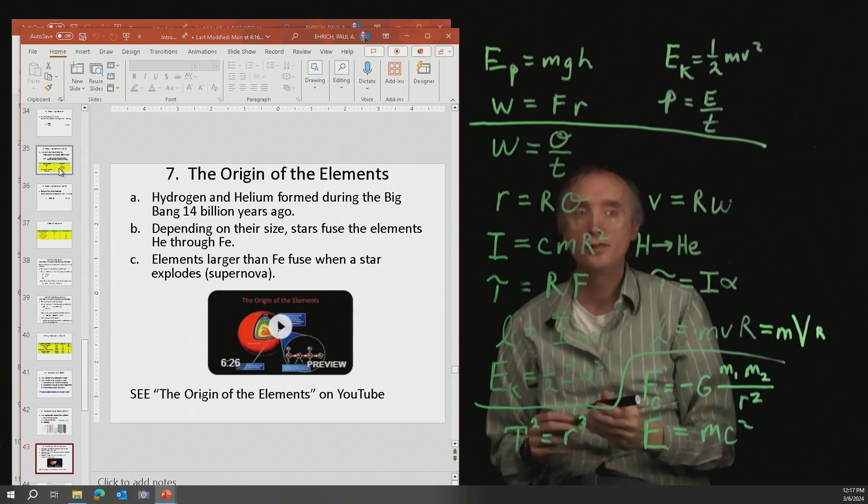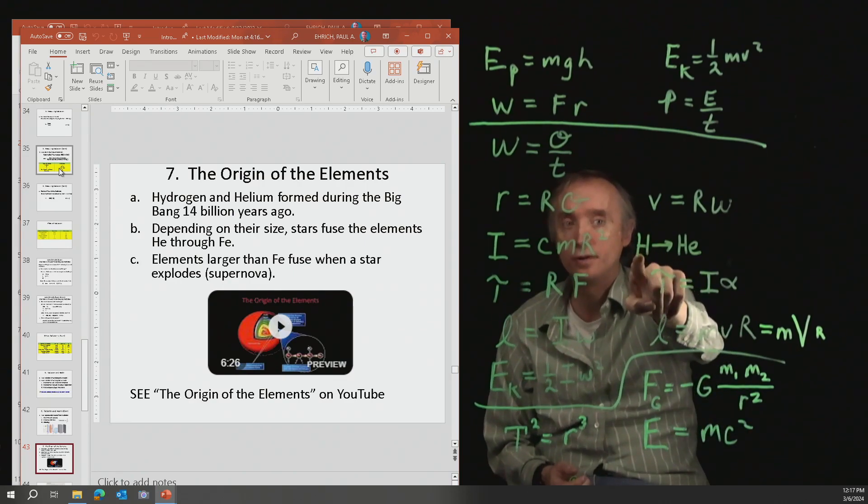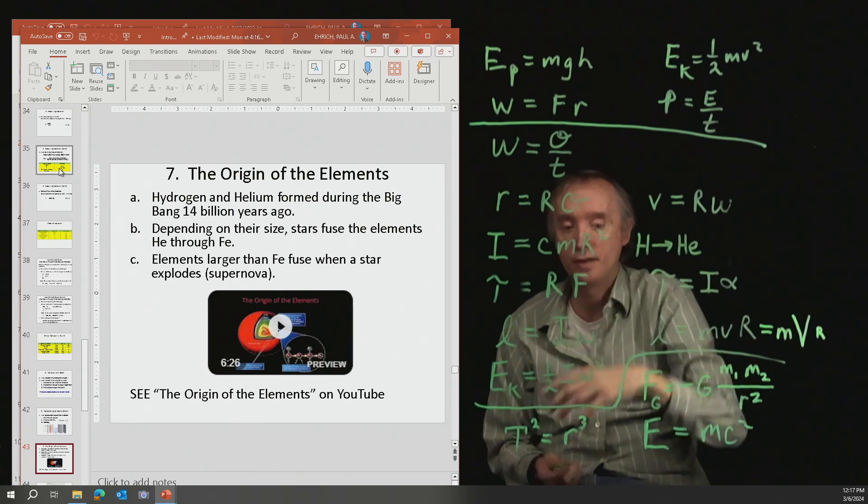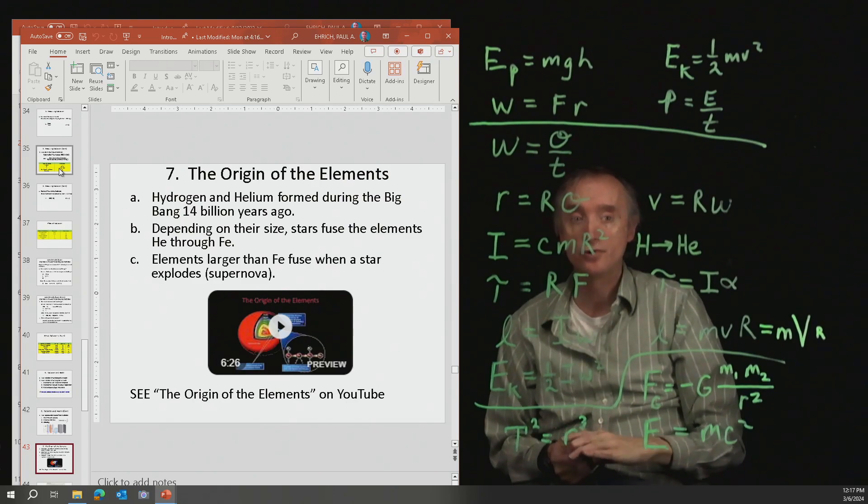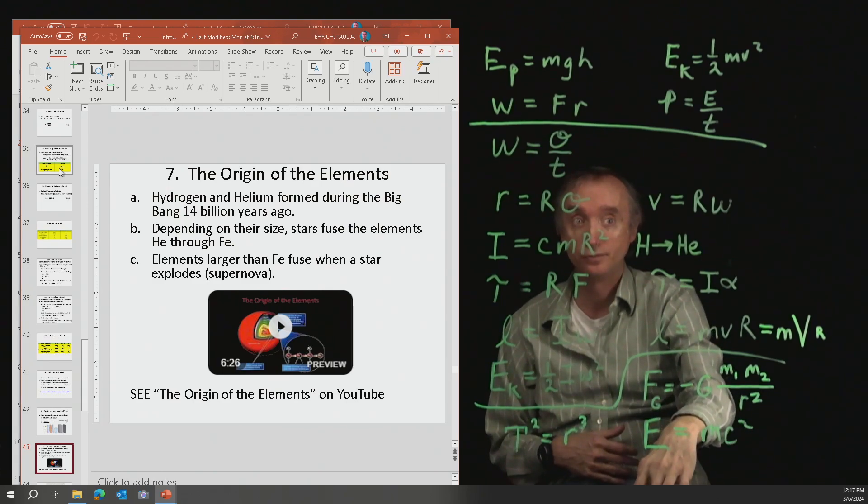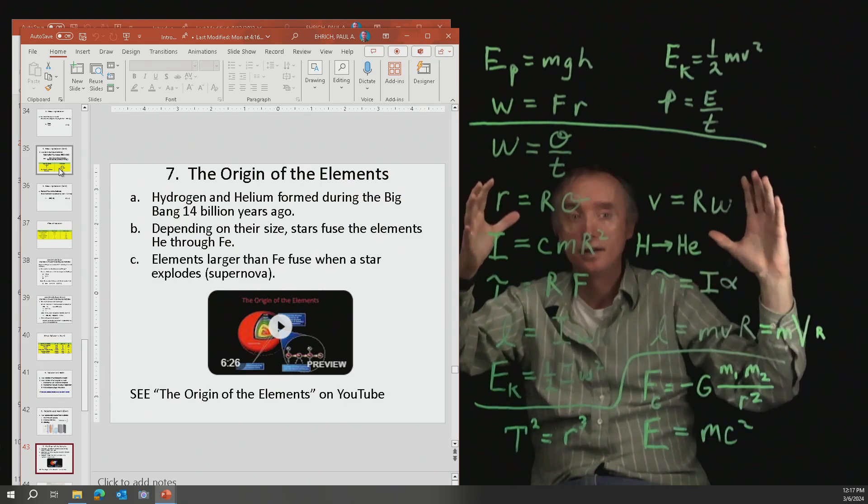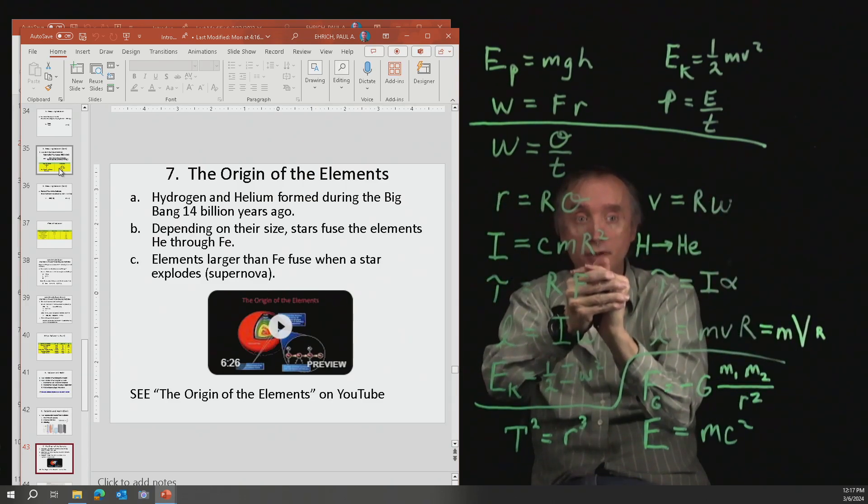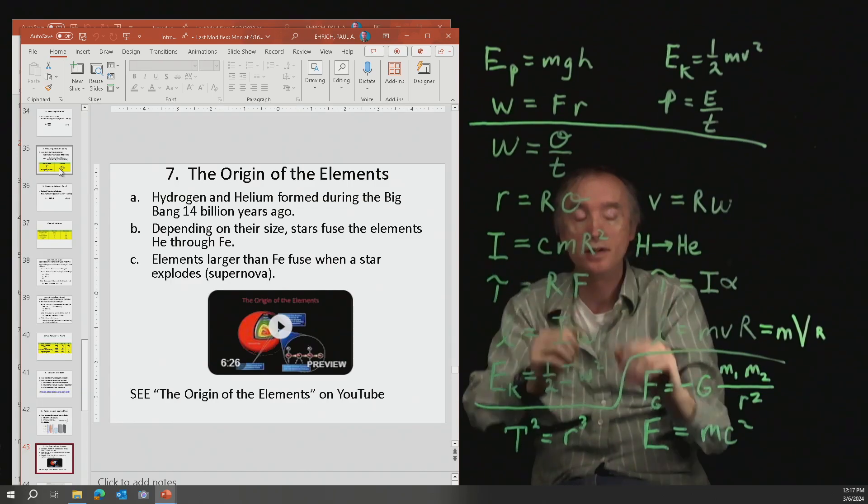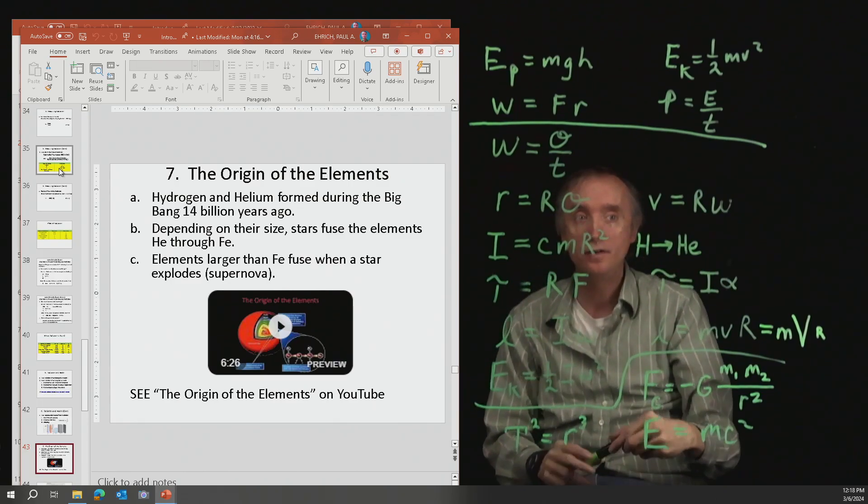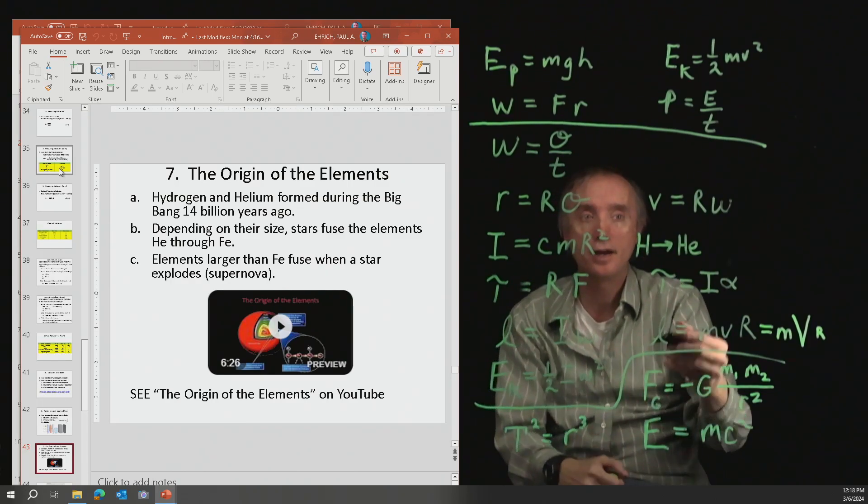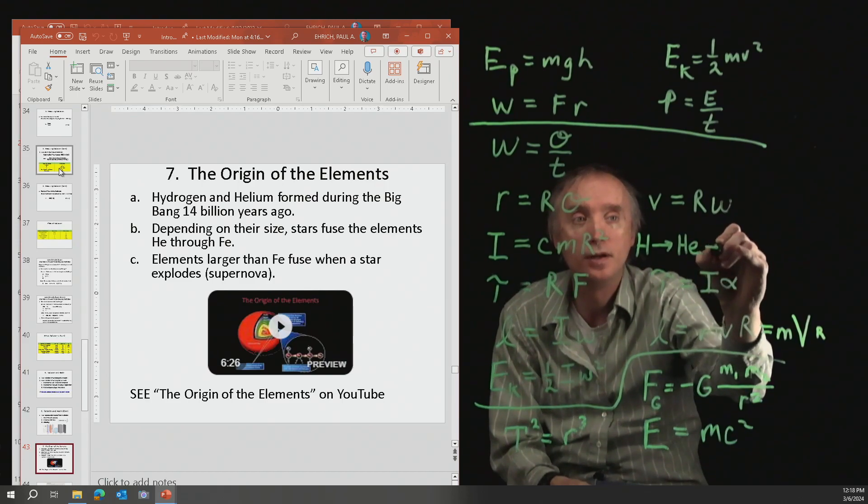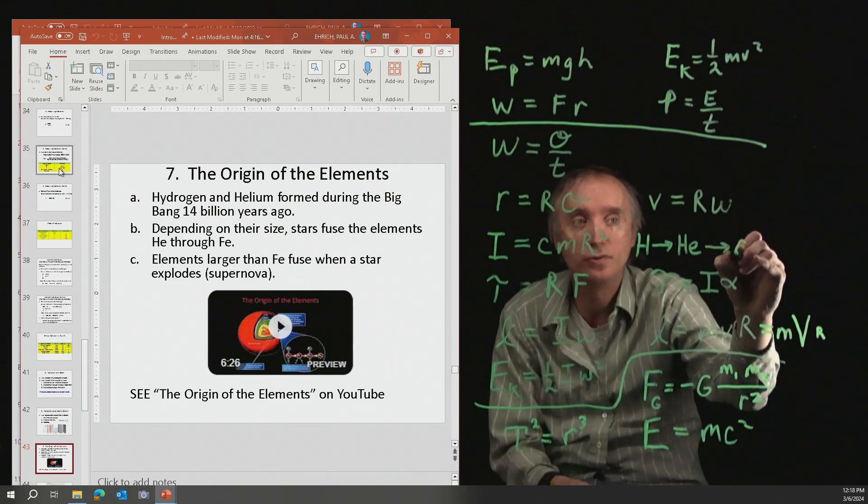But eventually, a star will start to run out of hydrogen. The nuclear explosions will start to die down, and the star will start to collapse because of gravity again. But as it collapses, it heats up again. If the temperature gets high enough, helium can be fused into carbon.